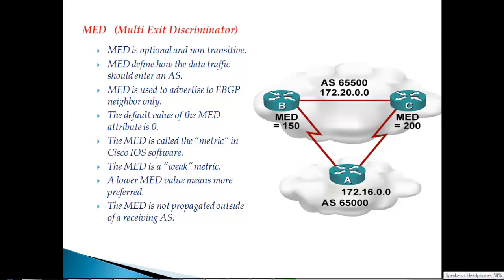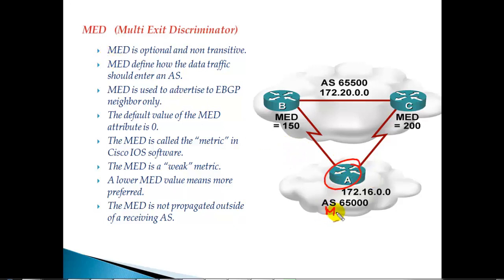In this section we'll talk about the MED attribute — Multi-Exit Discriminator — which is an optional non-transitive BGP attribute. It is going to define how traffic should enter an autonomous system. Let's make a simple scenario to understand when and where MED attributes are applicable.